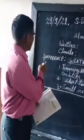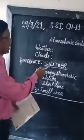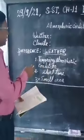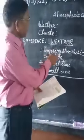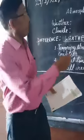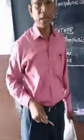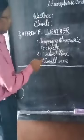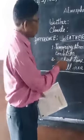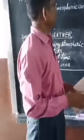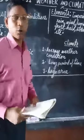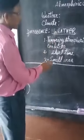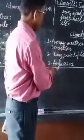Now let us understand the difference between weather and climate. Weather is a temporary condition and climate is average. Weather is for a short time and climate is for a long period of time. Weather is for a small area and climate is for a large area.